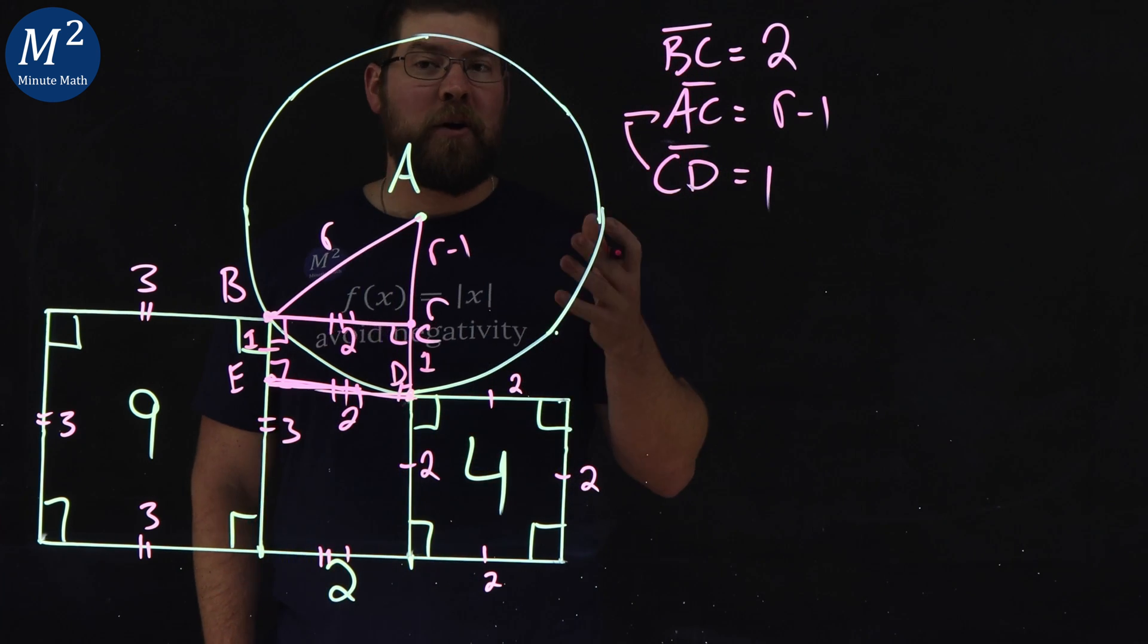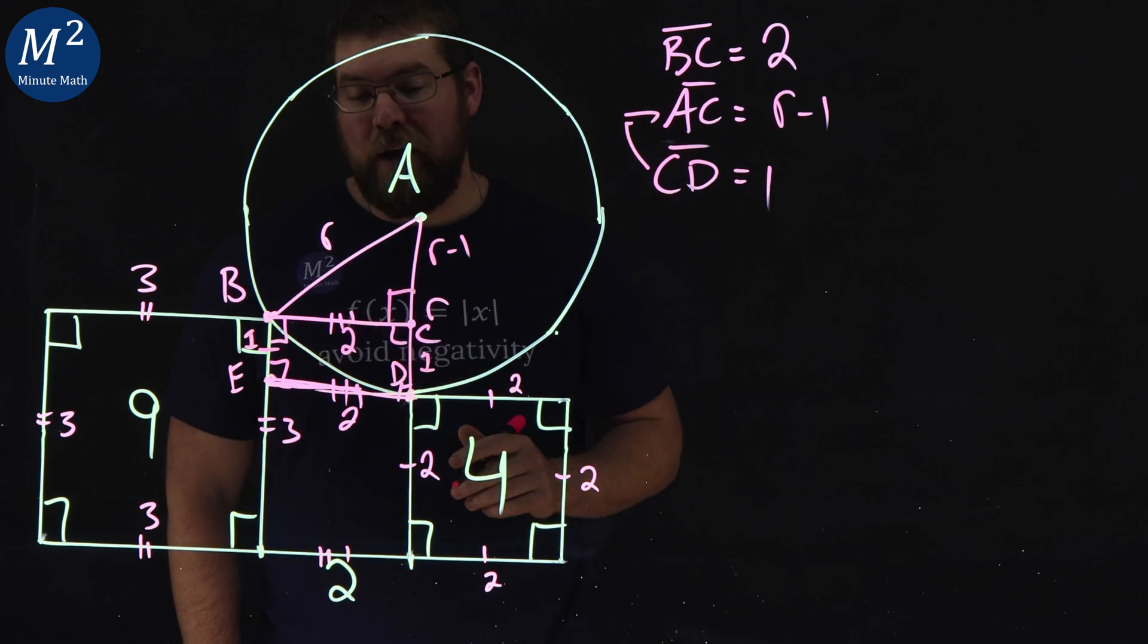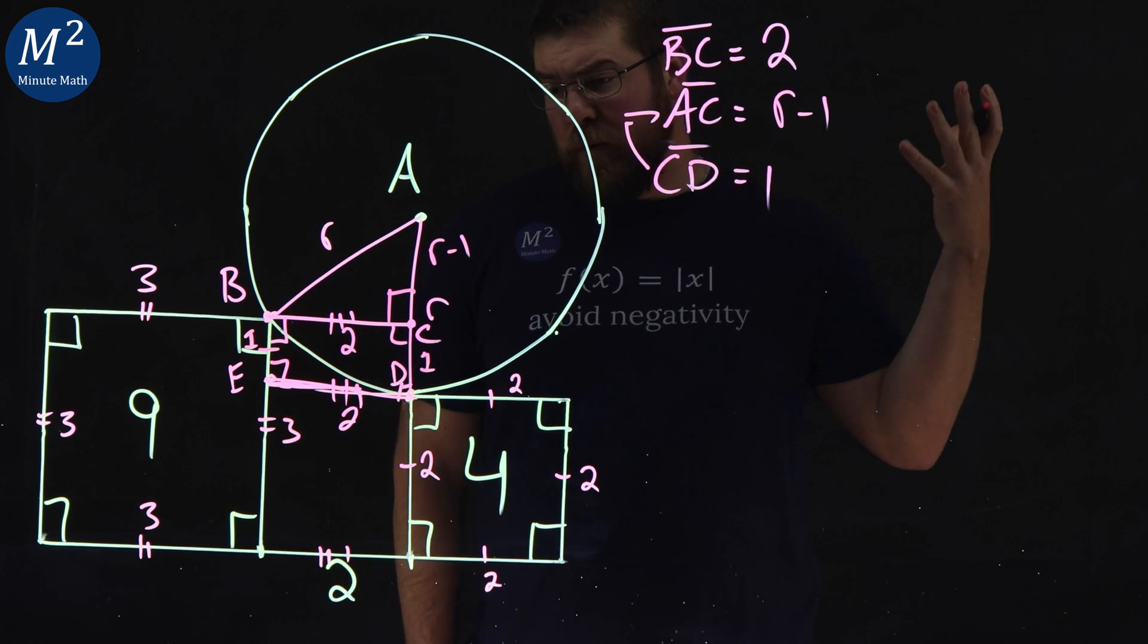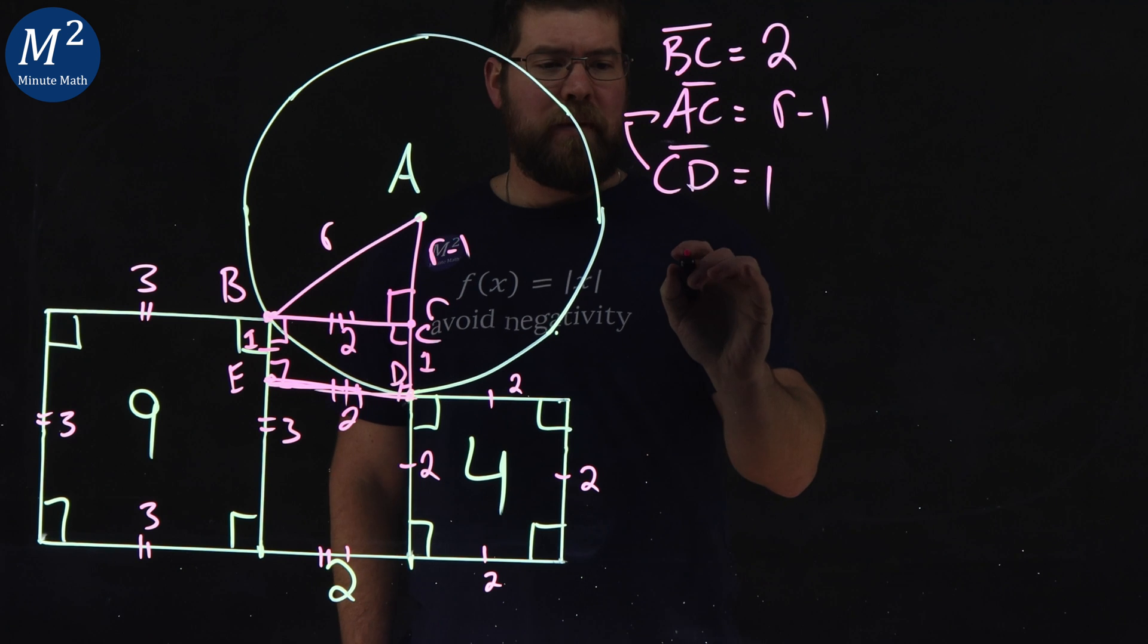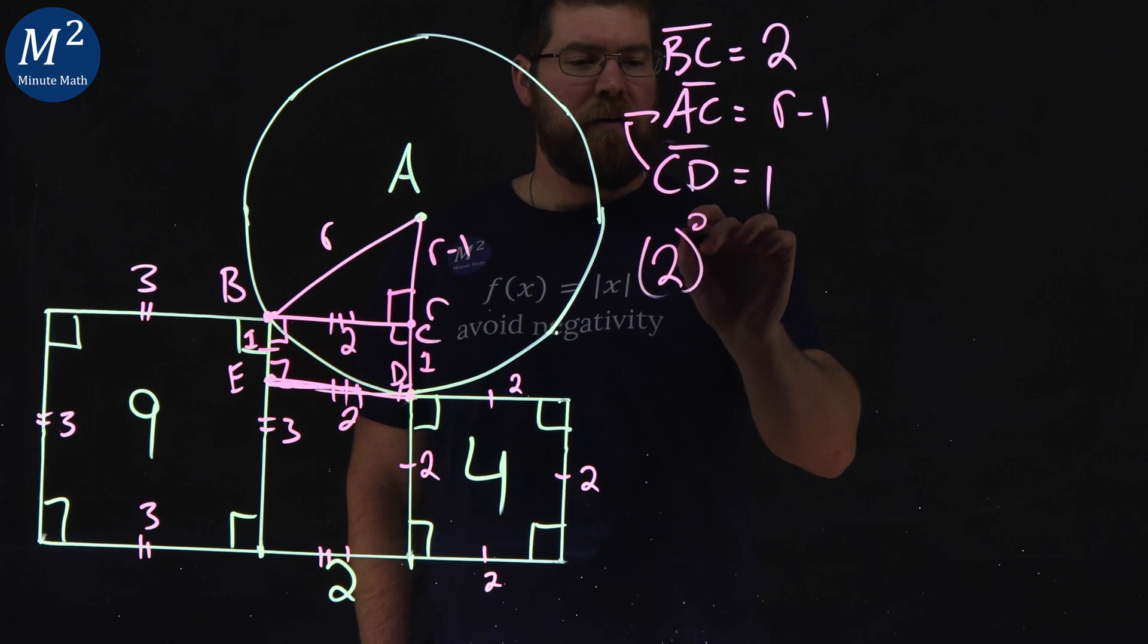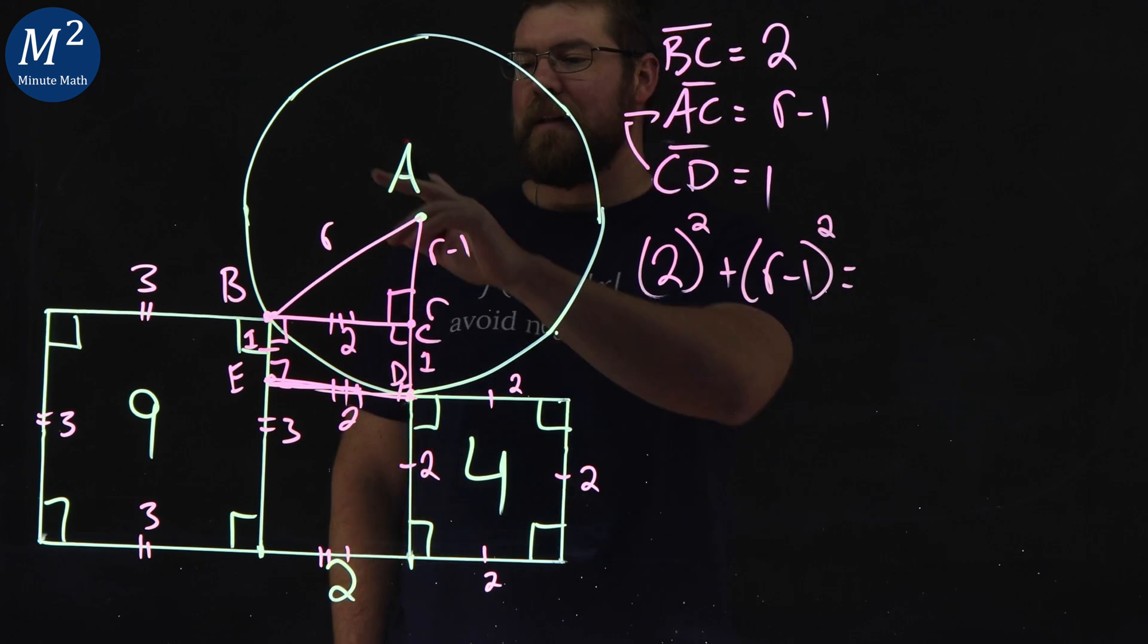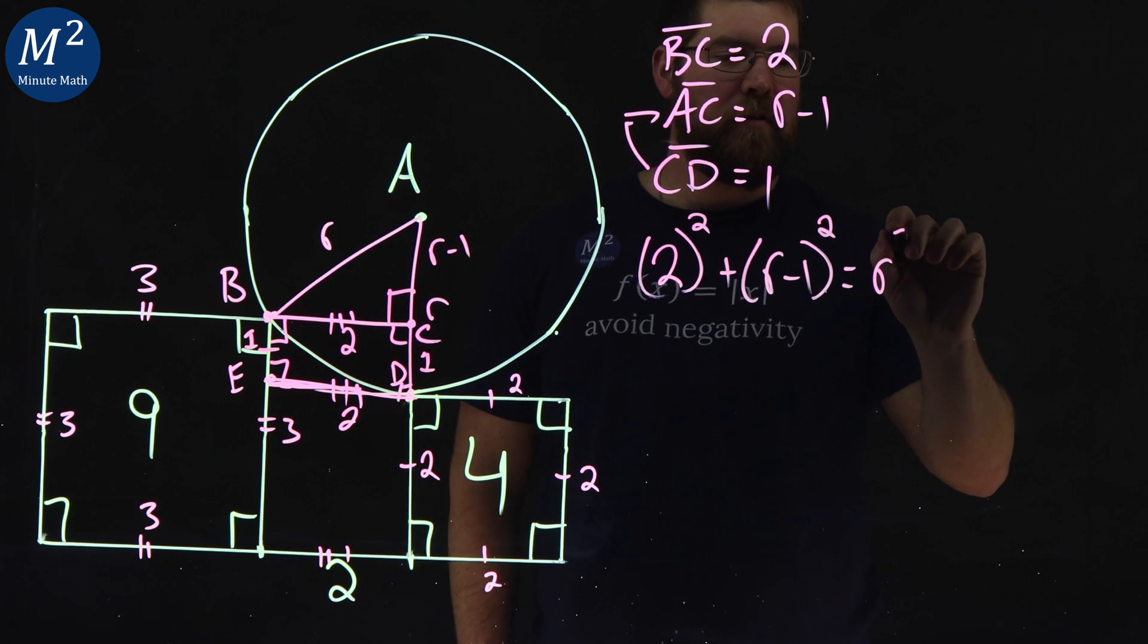And with that, we can use our Pythagorean theorem. We got a right triangle going on here. So A squared plus B squared equals C squared. Let's call my A is two squared plus B squared, R minus one, and C squared is just R squared.